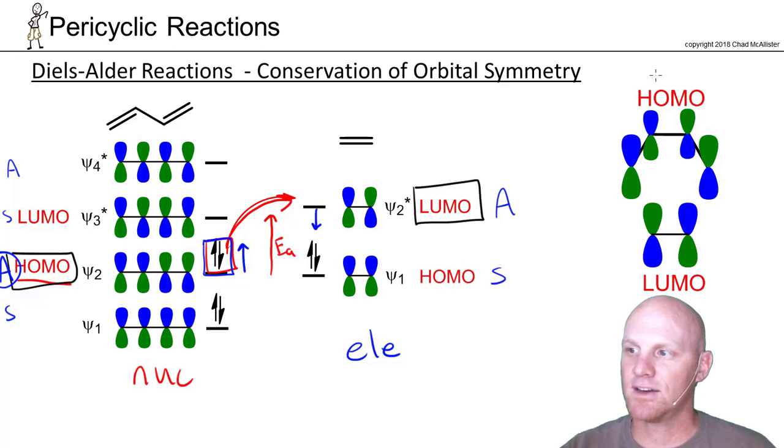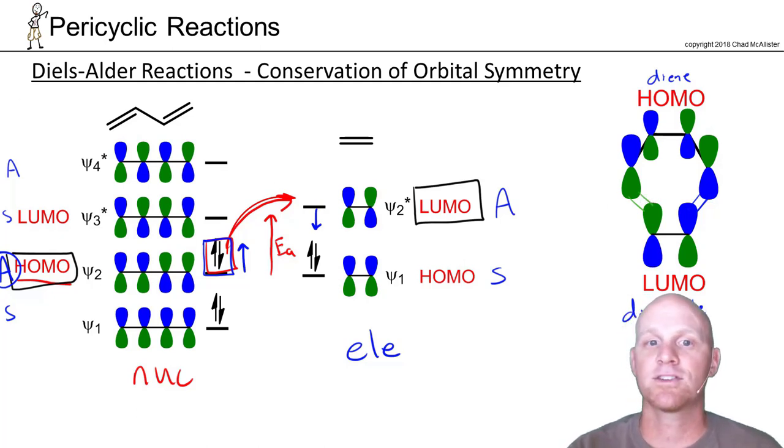If we look at the diene up top here interacting with the dienophile down below, we can see the diene coming right on top of the dienophile, and its bottom lobe of its π system is going to interact with the top lobe of the dienophile. Same thing over here - the bottom lobe of the diene interacts with the top lobe of the dienophile, and they match in phase perfectly. Because they match, I'll have no problem forming the new sigma bonds that I need to form.